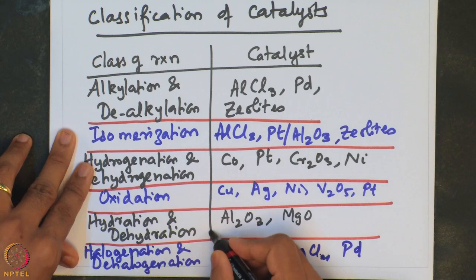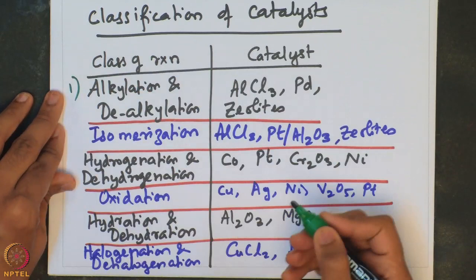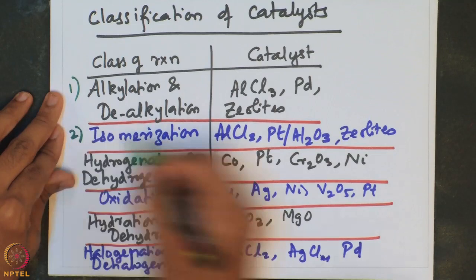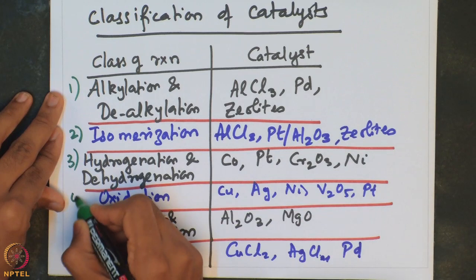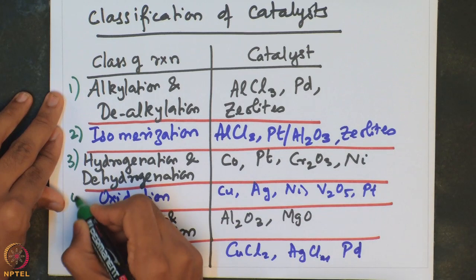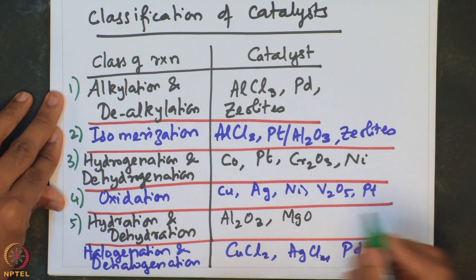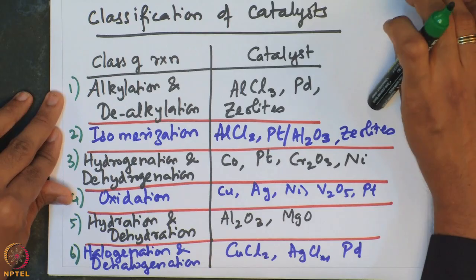These are the typical examples of catalysts used for different types of reactions, classified into six classes: alkylation and dealkylation using AlCl₃, palladium, and zeolites; isomerization using supported catalyst platinum on alumina; hydrogenation and dehydrogenation using cobalt and platinum; oxidation using copper, silver, nickel, and vanadium oxide; hydration and dehydration using alumina and MgO; and halogenation and dehalogenation using copper chloride, silver chloride, and palladium.